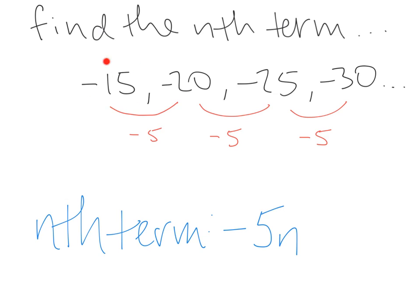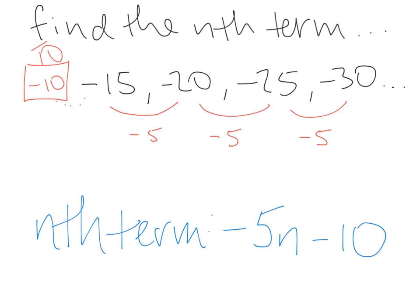Now we find the zero term. Since we're going minus 5 each time, we add 5 to get back to the zero term. -15 plus 5 is -10, so term zero is -10. We stick on -10 to our nth term, giving the final answer: the nth term of the sequence -15, -20, -25, -30 is -5n - 10.